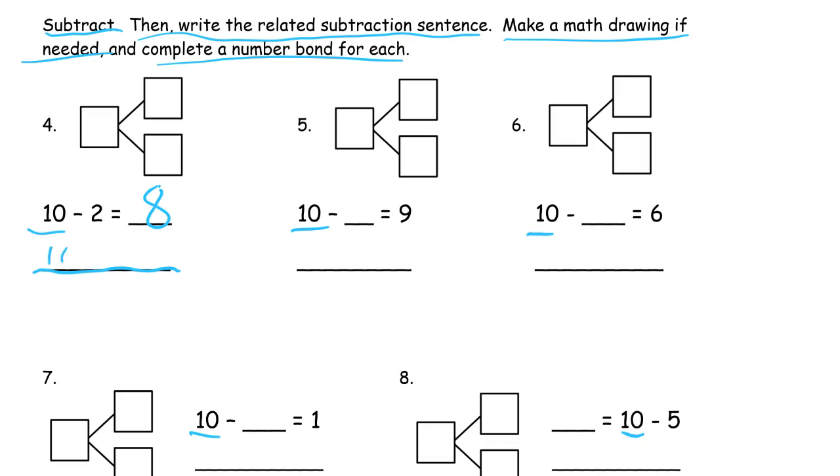So we're still starting with 10. But if we subtract 8, then we'll have 2 left. And our number bond is going to be a total of 10 with parts of 2 and 8, or 8 and 2.